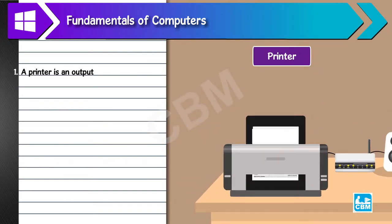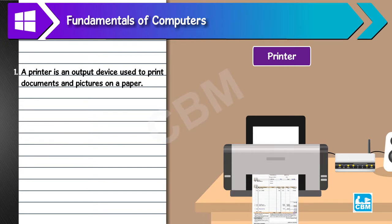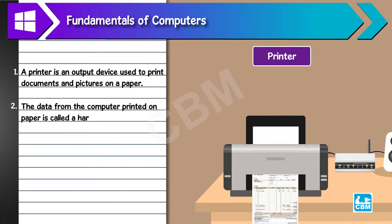A printer is an output device used to print documents and pictures on paper. 2. The data from the computer printed on paper is called a hard copy.